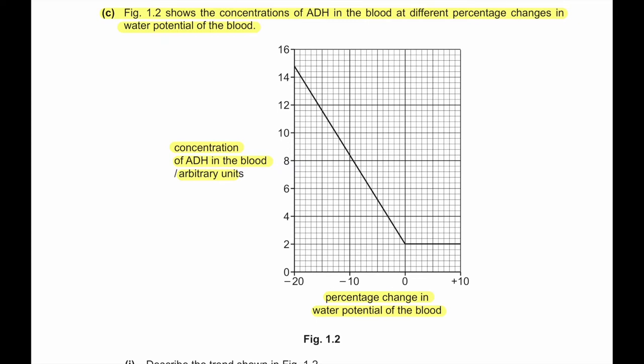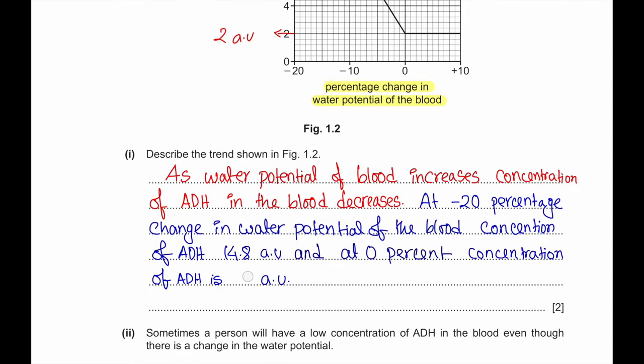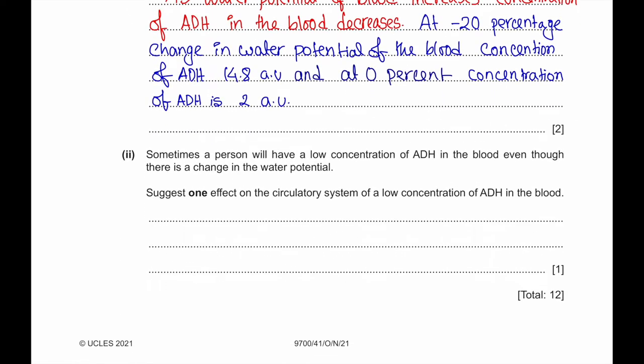Describe the trend shown in figure 1.2. At minus 20 percent water potential of the blood, concentration of ADH is 14.8 arbitrary units, whereas at 0 percent, concentration of ADH is 2 arbitrary units. Sometimes a person will have a low concentration of ADH in the blood even though there is a change in water potential. Suggest one effect on the circulatory system of a low concentration of ADH in the blood. The blood volume decreases, so blood pressure decreases.